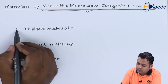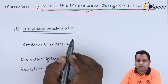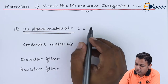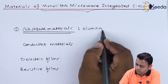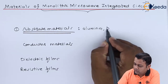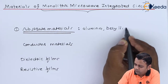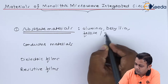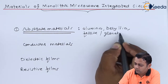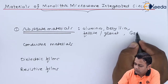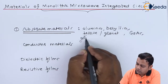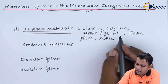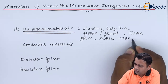For substrate materials, which are of prime importance, the choices include aluminium, beryllia, ferrite materials, gallium arsenide, glass, rutile, and sapphire.